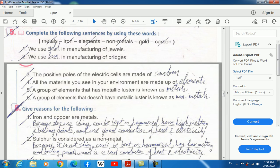Three, the positive poles of the electric cells are made of carbon. Four, all the materials you see in your environment are made up of elements. Five, a group of elements that has metallic luster is known as metals.